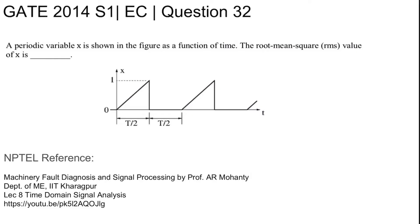This is GATE 2014 Set 1 EC question number 32. A periodic variable x is shown in a figure as a function of time. The root mean square (RMS) value of the signal x is being asked for.